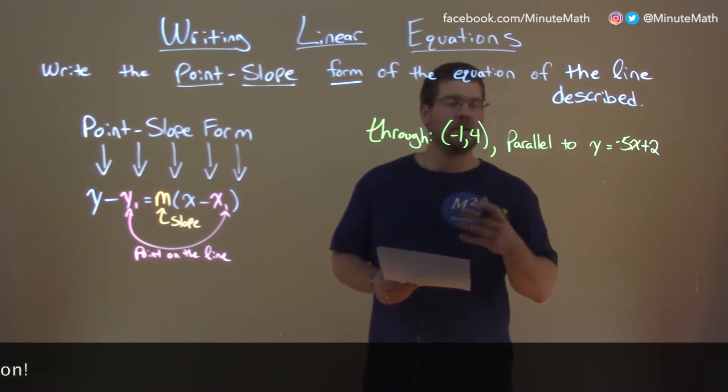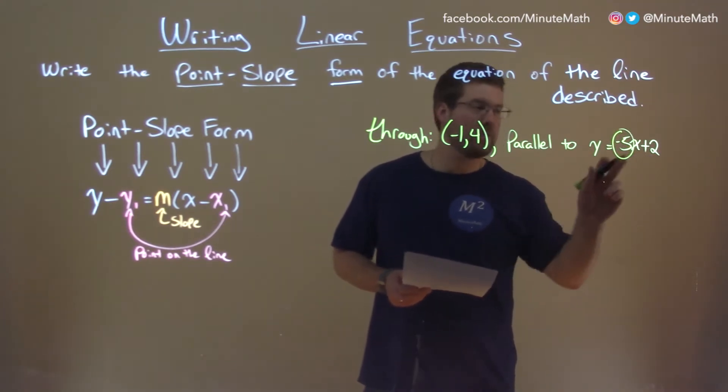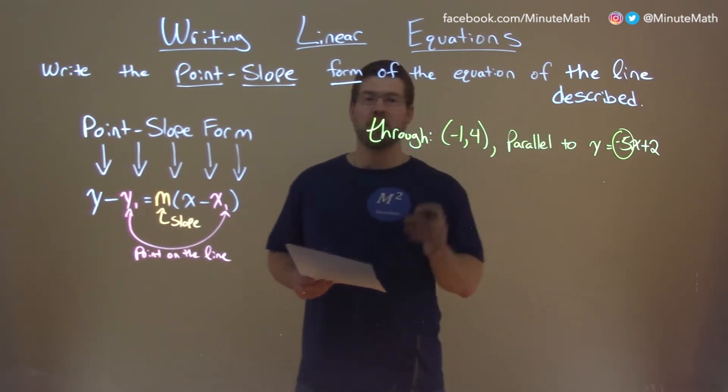So our line shares the same slope as this line, which is negative 5 here. This one's in slope intercept form. So we got our slope here, we have our point, let's start cracking.